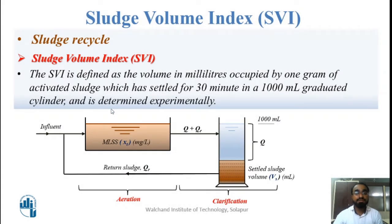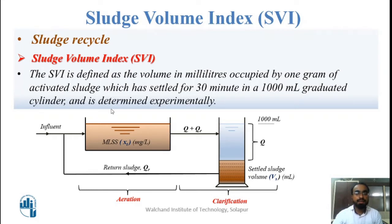So what is meant by SVI? Before that we have to understand why we study SVI. The purpose of the return sludge coming from the secondary treatment plant to the bioreactor is very important to maintain the F/M ratio and MLSS concentration in the bioreactor. SVI targets how much return sludge we have to add into the influent so that the F/M ratio and the MLSS concentration are maintained. It is mostly focused on the concentration of microorganisms in the biological reactor.